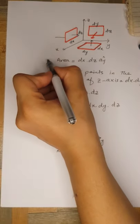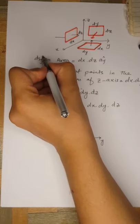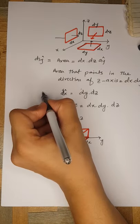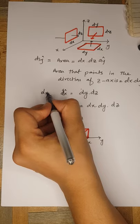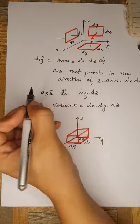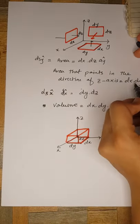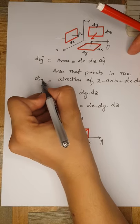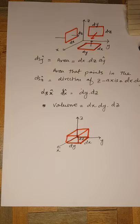We can denote these differential areas as dSy, dSx, and dSz respectively. This was all about the Cartesian coordinate system, which is very simple to understand.